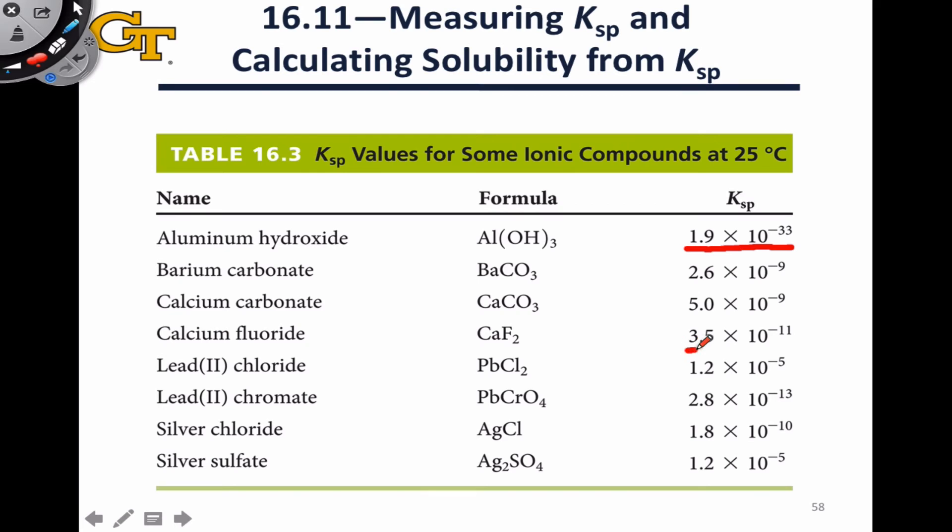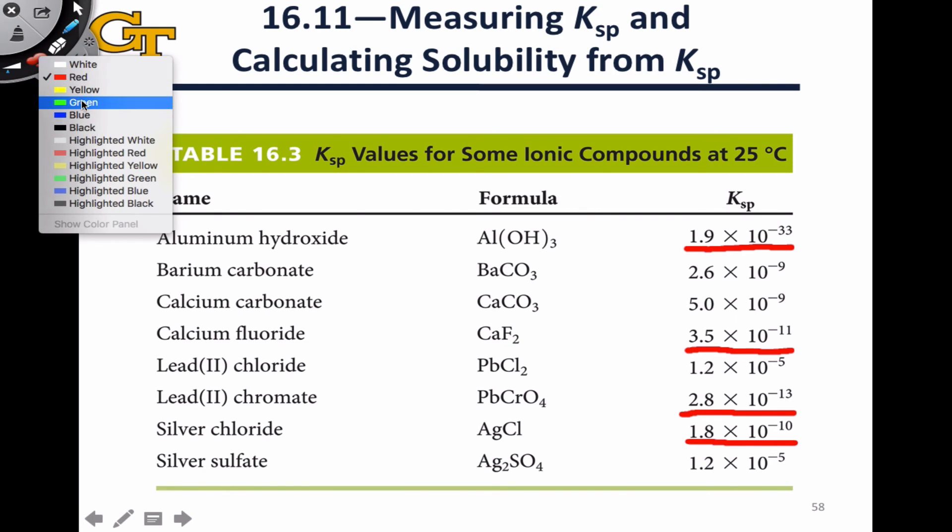A salt like calcium fluoride is also highly insoluble with a very tiny equilibrium constant. And I'll point out a couple of other examples here. Silver chloride, classic insoluble salt, right? It's in the solubility rules as an exception to the solubility of all halides. Lead chromate, also a very small Ksp value. These all indicate relatively insoluble salts.